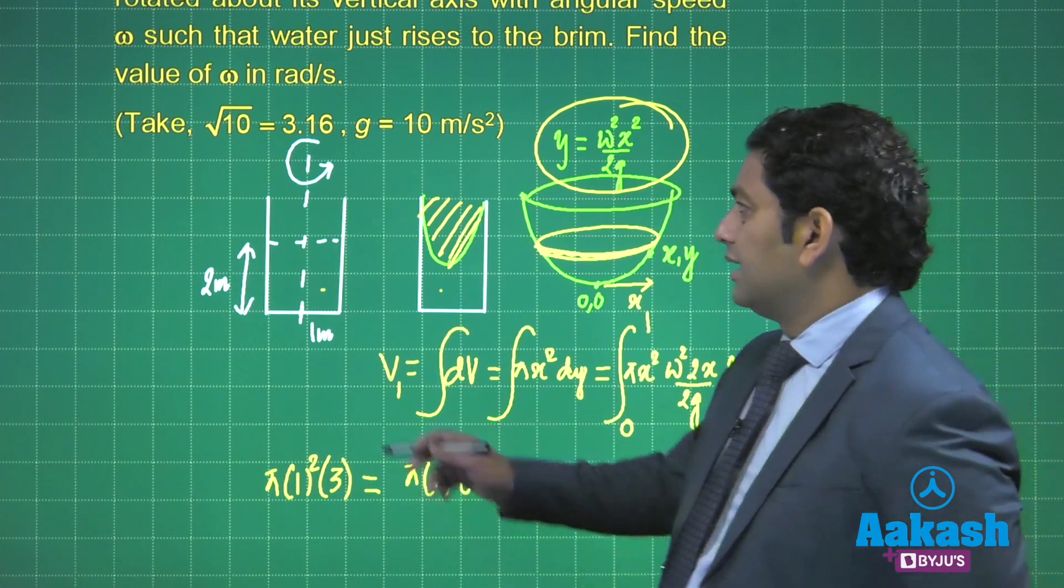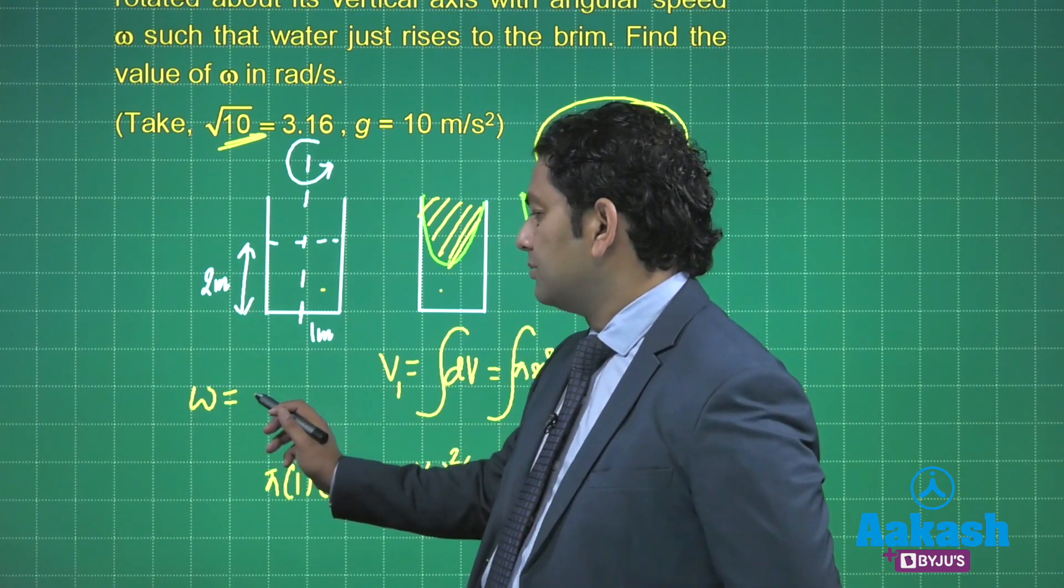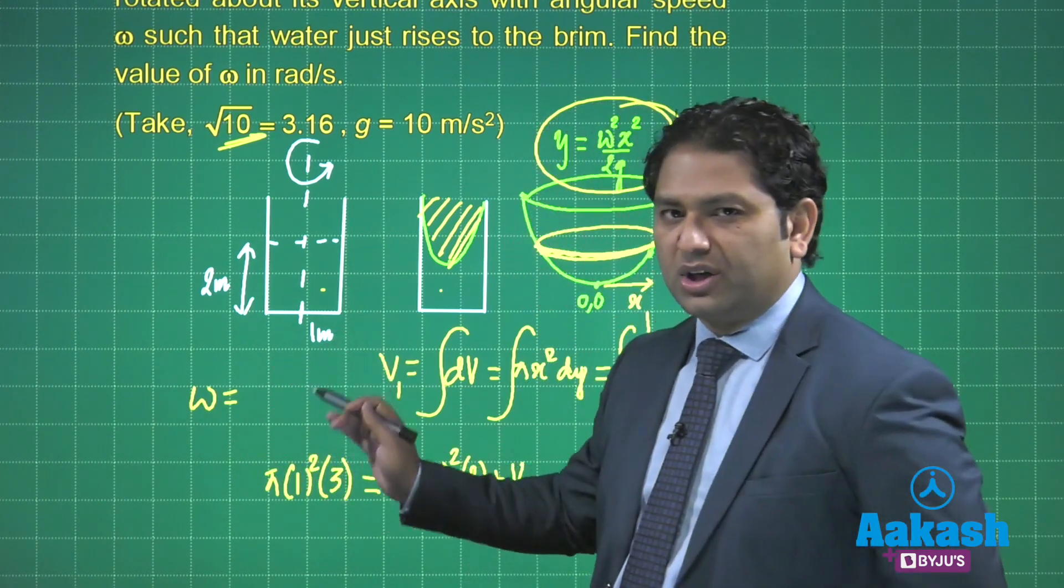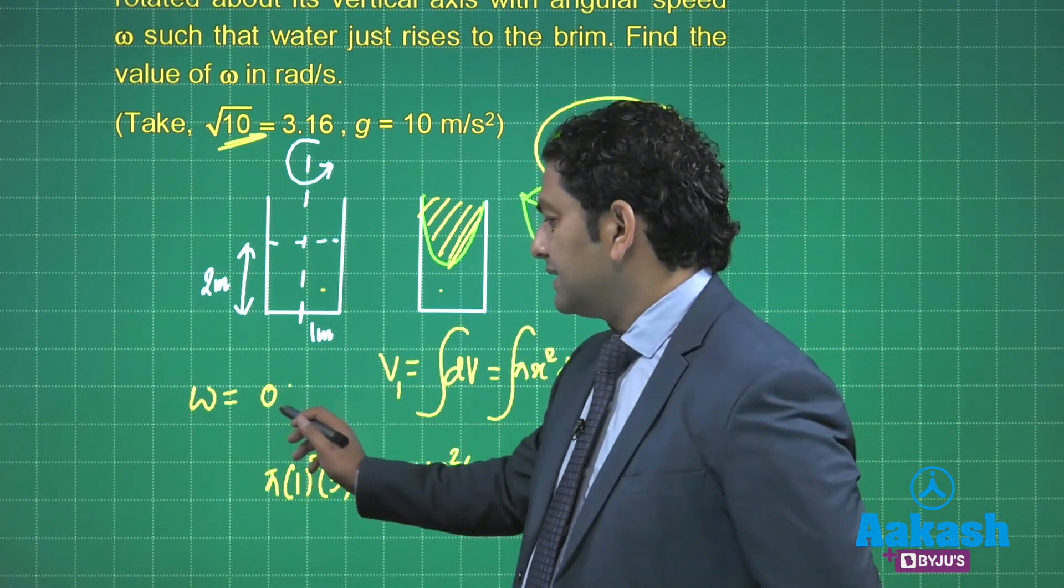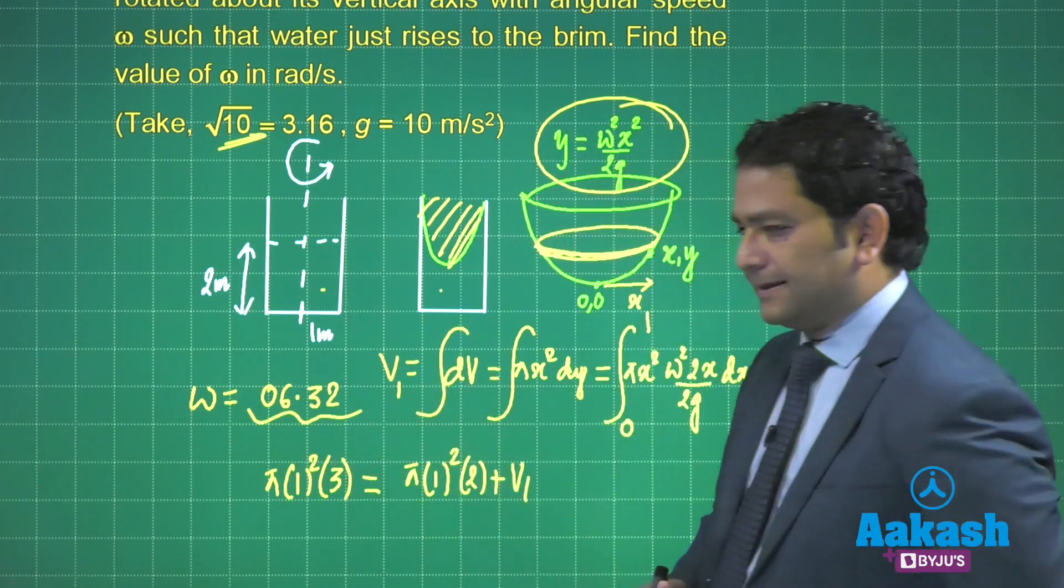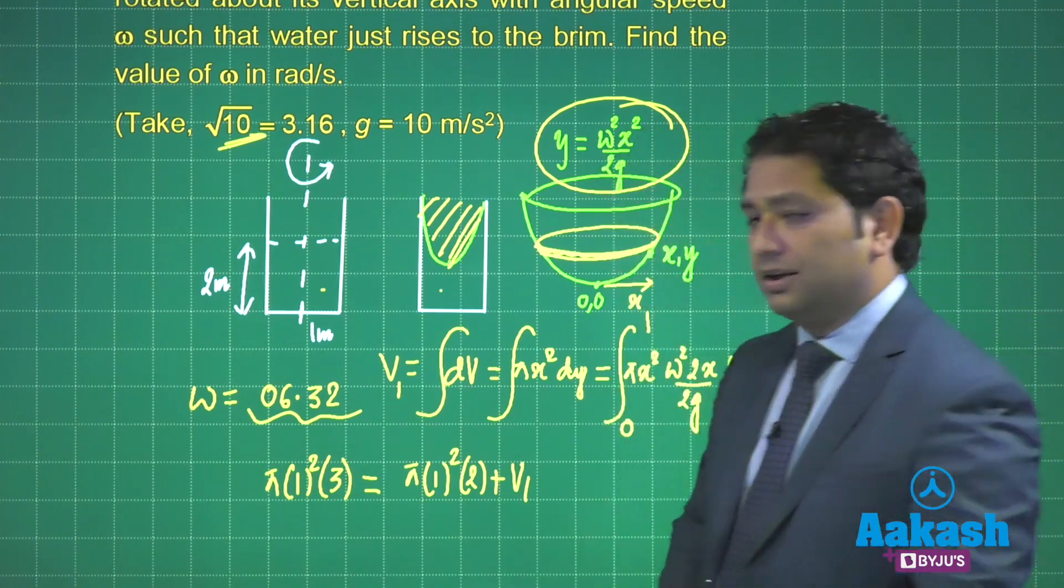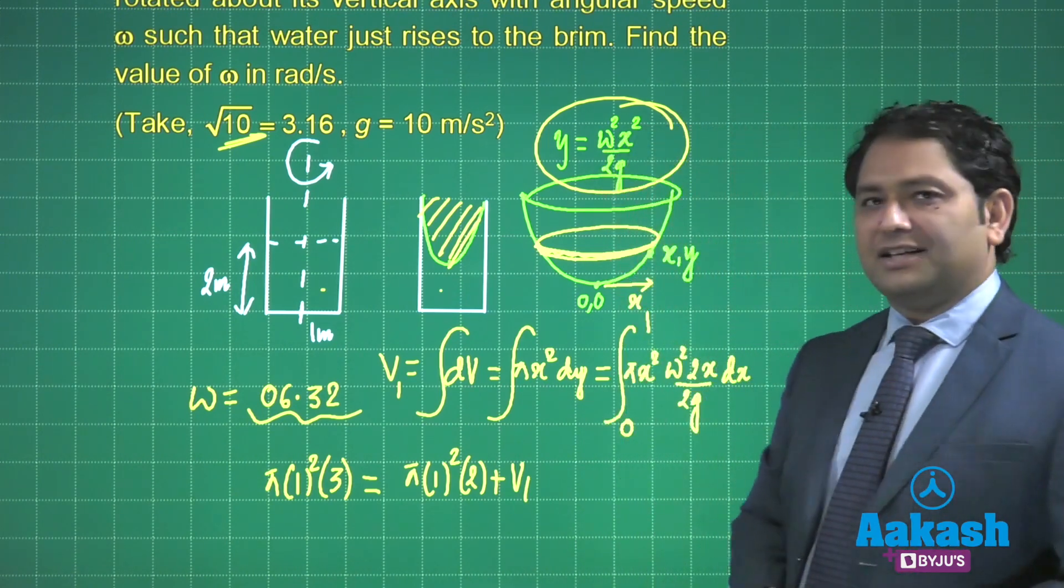When you solve this, the value of ω comes out to be 6.32. This is how you're going to represent it - takes a little bit of calculation, I agree, but it's a beautiful one that teaches you a lot.